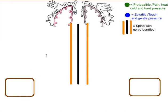When we talk about sensibility, we have something called epicritic pathway and the protopathic pathway. Protopathic is pain, heat, cold and hard pressure, whereas epicritic is gentle pressure and touch. The difference between protopathic pathway is that their nerves way up to the brain are not the same.